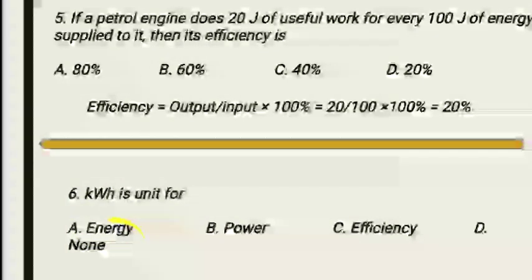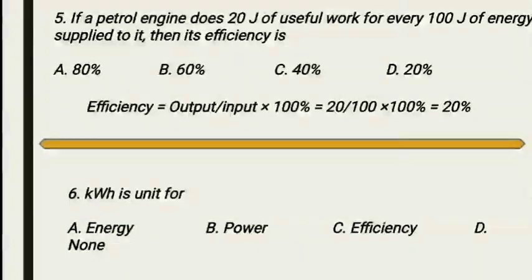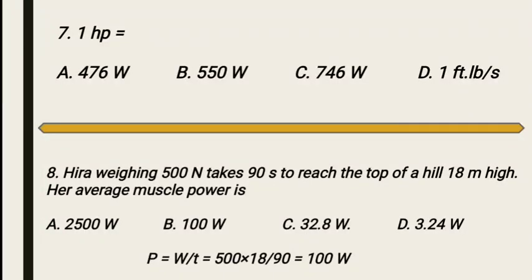The seventh MCQ: one horsepower is equal to how many watts? Option A is 772 watts, Option B is 550 watts, Option C is 774 watts, and Option D is one foot-pound per second. The correct option is Option C: 746 watts — specifically stated here as 772 watts, so Option C.